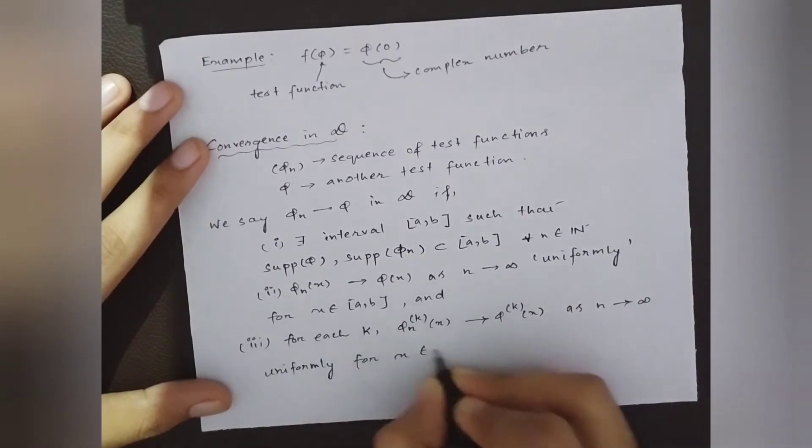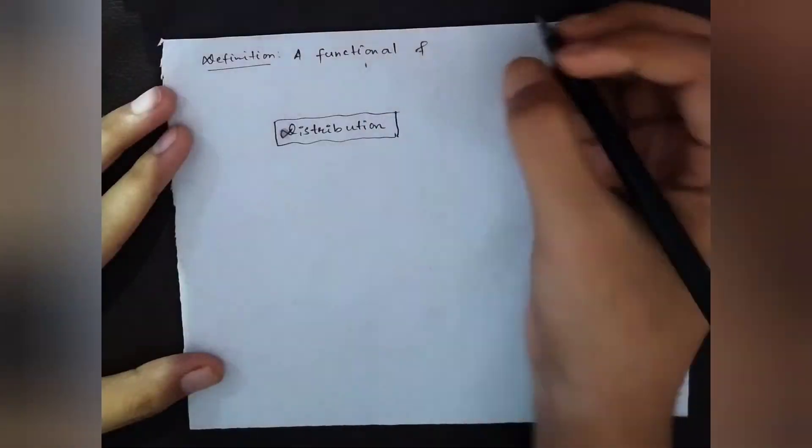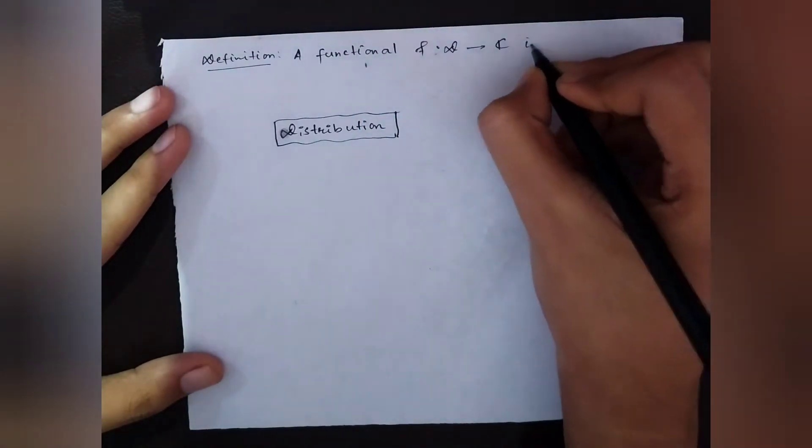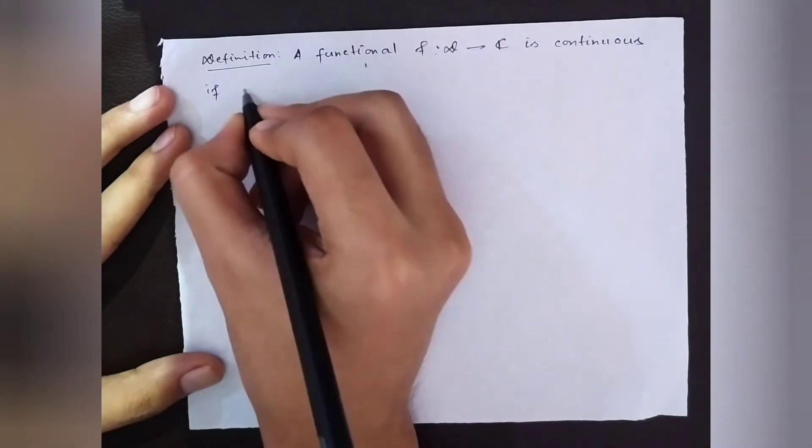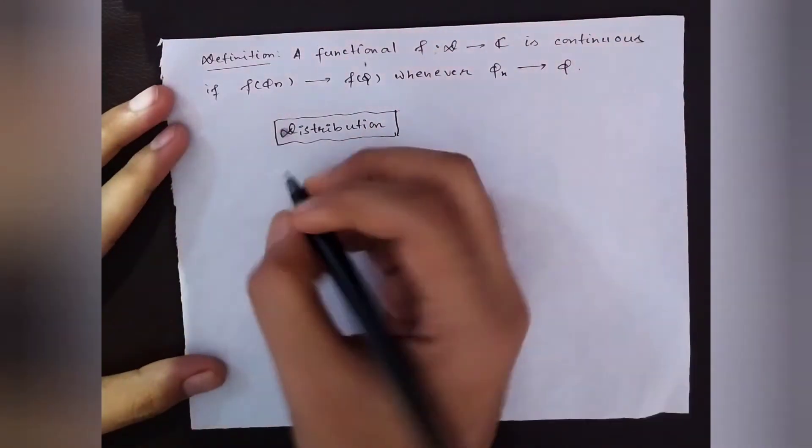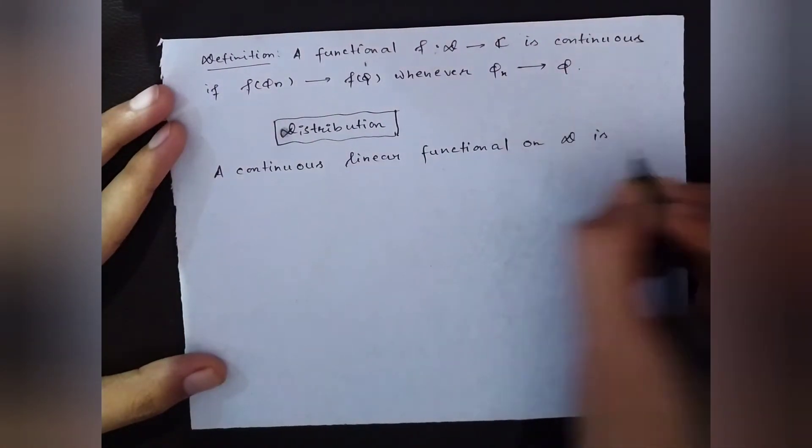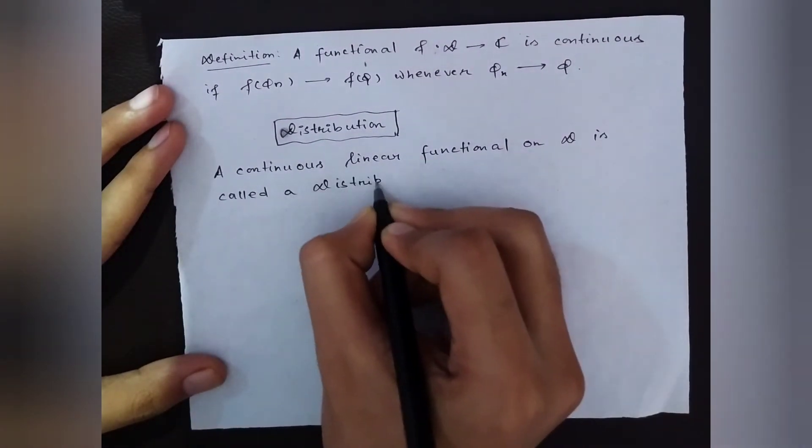Finally, we are ready to give the definition of distribution. A continuous linear functional on the space of test functions is called a distribution or generalized function. This means f(φ_n) converges to f(φ) whenever a sequence of test functions φ_n converges to φ.